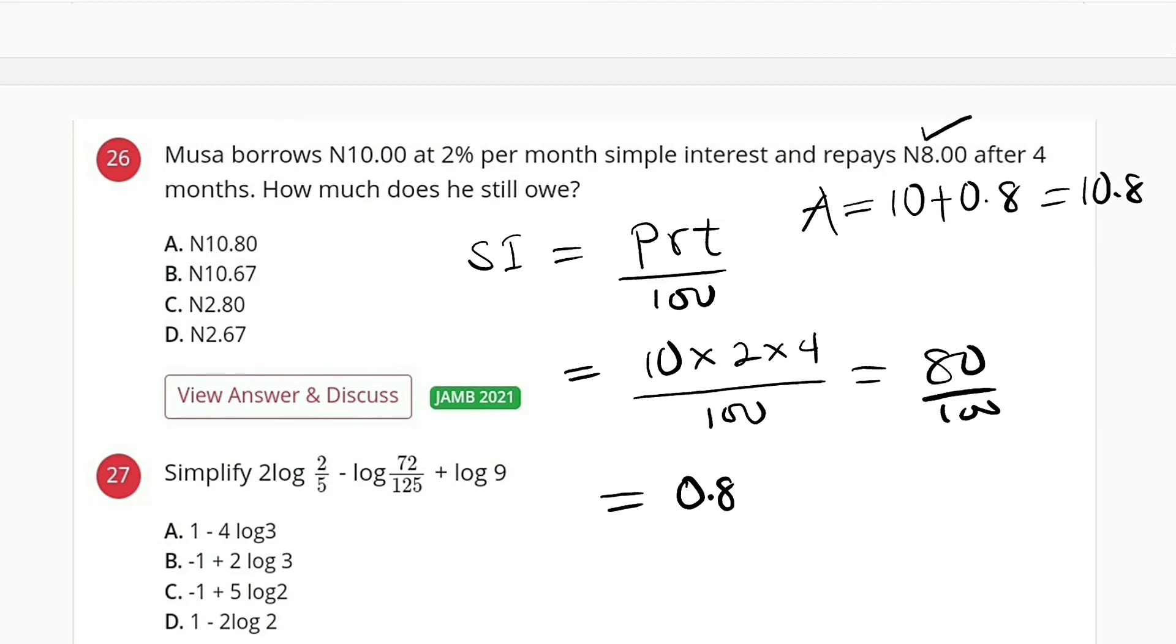So we are going to subtract this 8 from 10.8 to determine how much he owes. So we have 10.8 minus 8, this is equal to 2.8, and 2.8 is option C.